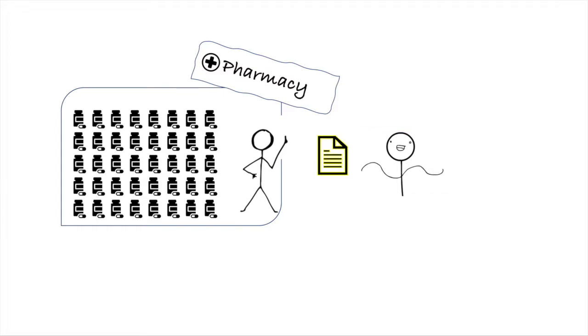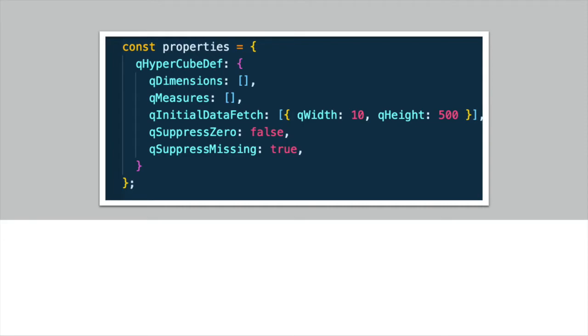The prescription paper represents the properties of the hypercube that fully explains the type of drugs you want, which is the dimensions, and the strength and dosage of the drug, which is analogous to the measures. As you can see, here's a simple example of a template of a hypercube properties that shows the properties of a hypercube that is to be returned by the engine.